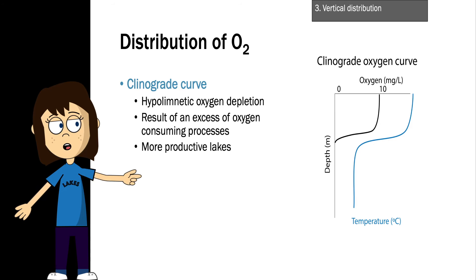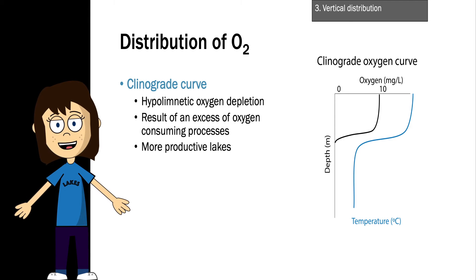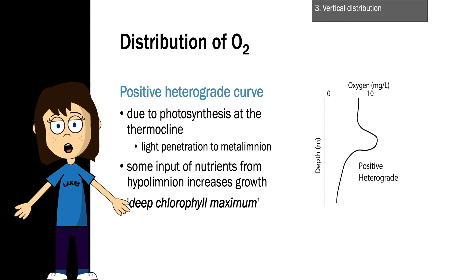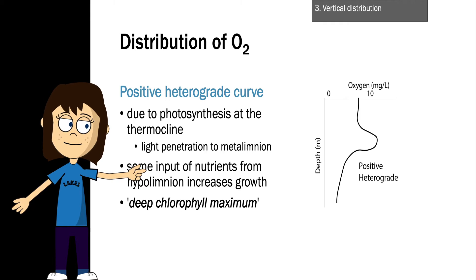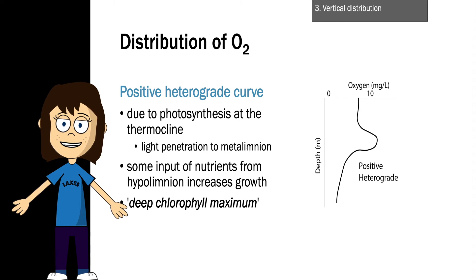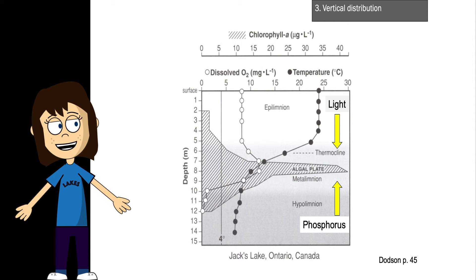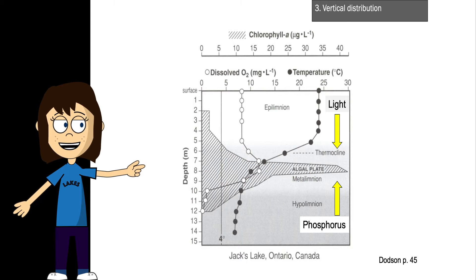The next type is the clinograde oxygen curve, where we see hypolimnetic oxygen depletion as a result of high levels of oxygen-consuming processes. Clinograde curves are commonly seen in productive lakes with a lot of algal growth. When that algae dies, it sinks into the hypolimnion and is decomposed by bacteria, consuming oxygen. A third type is the positive heterograde curve, where we see increases in oxygen concentration at the thermocline due to high levels of photosynthesis there — often called a deep chlorophyll maximum. Positive heterograde curves are common in oligotrophic lakes where light penetrates to the metalimnion, and algae preferentially grow there in a sweet spot with enough light from the surface and nutrient input from the hypolimnion.